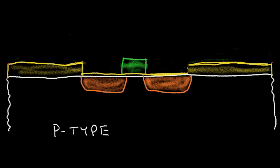The beauty is that if my gate mask or polysilicon mask is misaligned a little bit, when I put in the source and drain regions, the channel region underneath the gate is still aligned perfectly with the gate. If the gate were to be misaligned a little bit, the source and drain regions would still align perfectly to the gate. It's a self-aligned process.